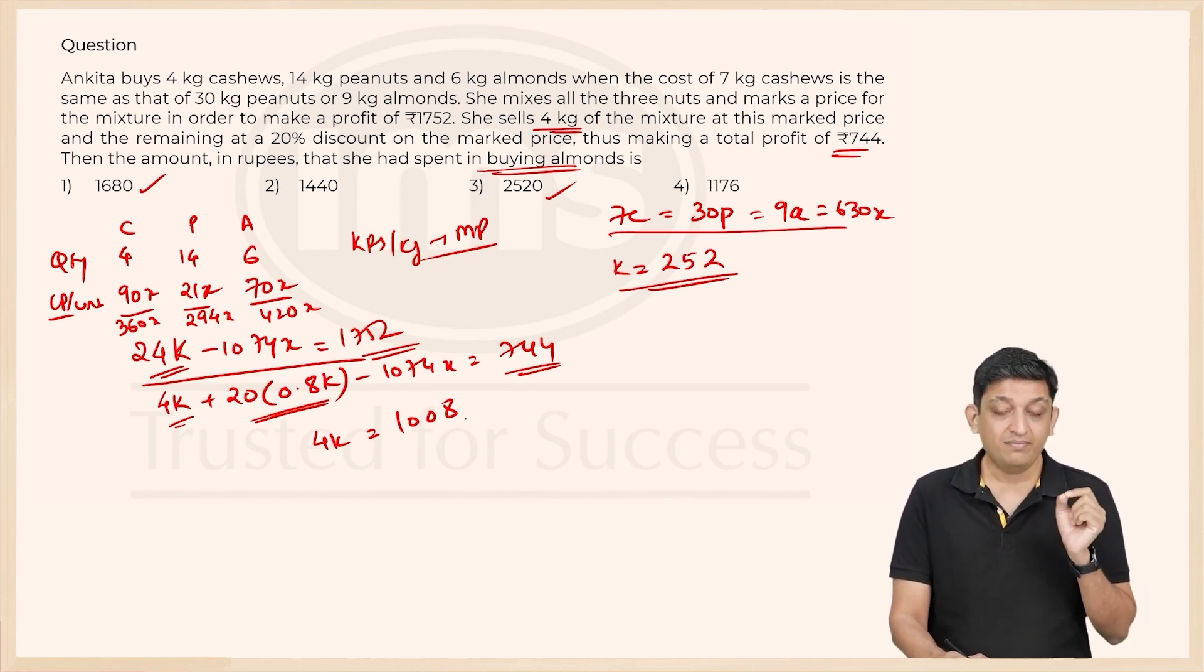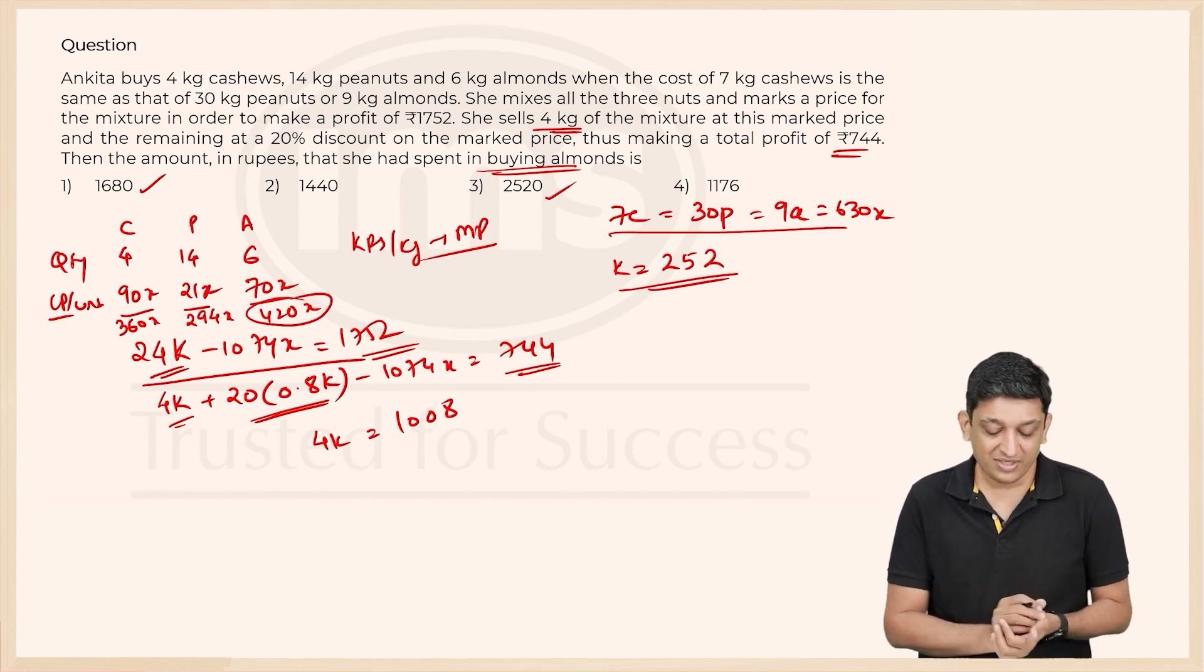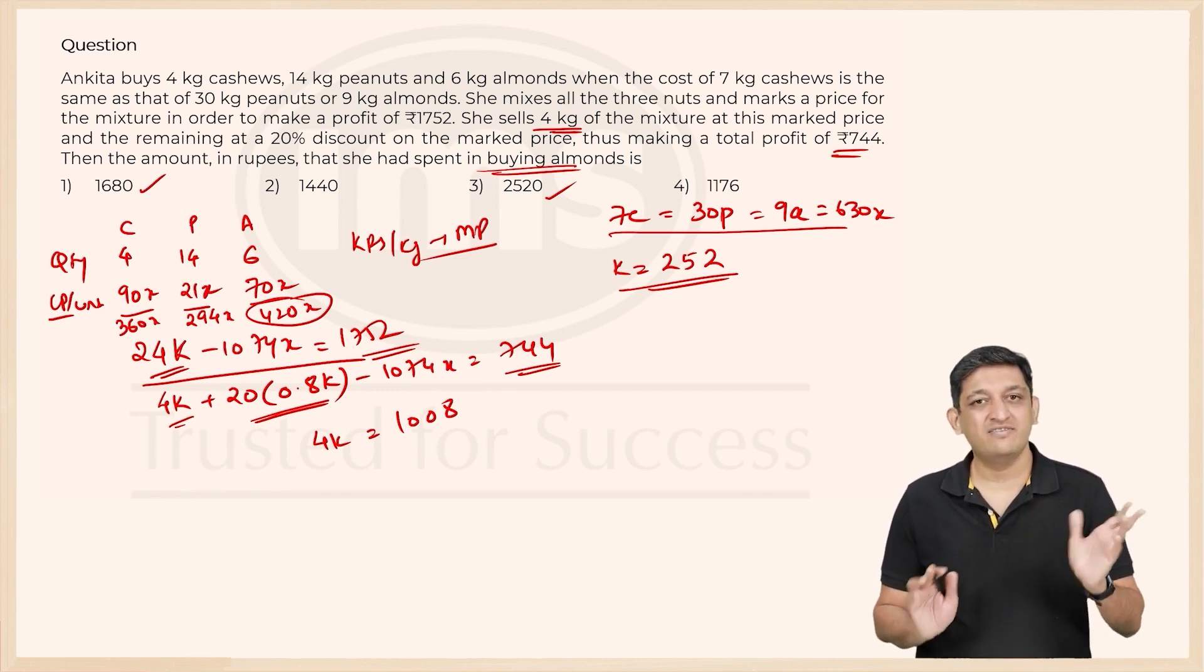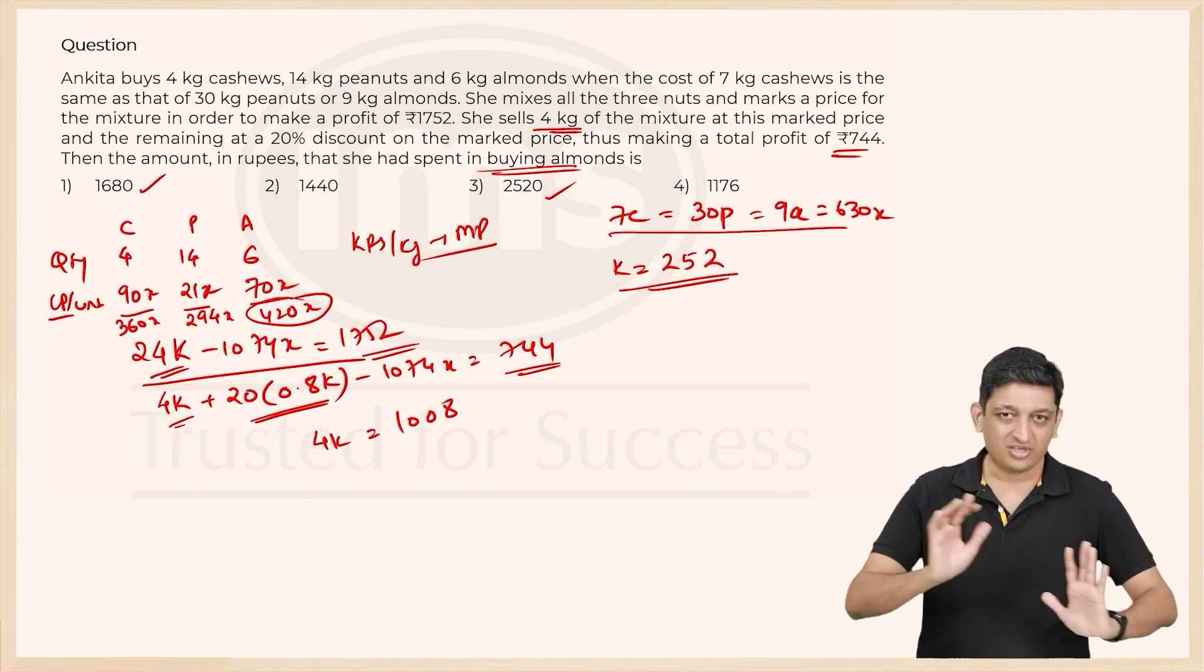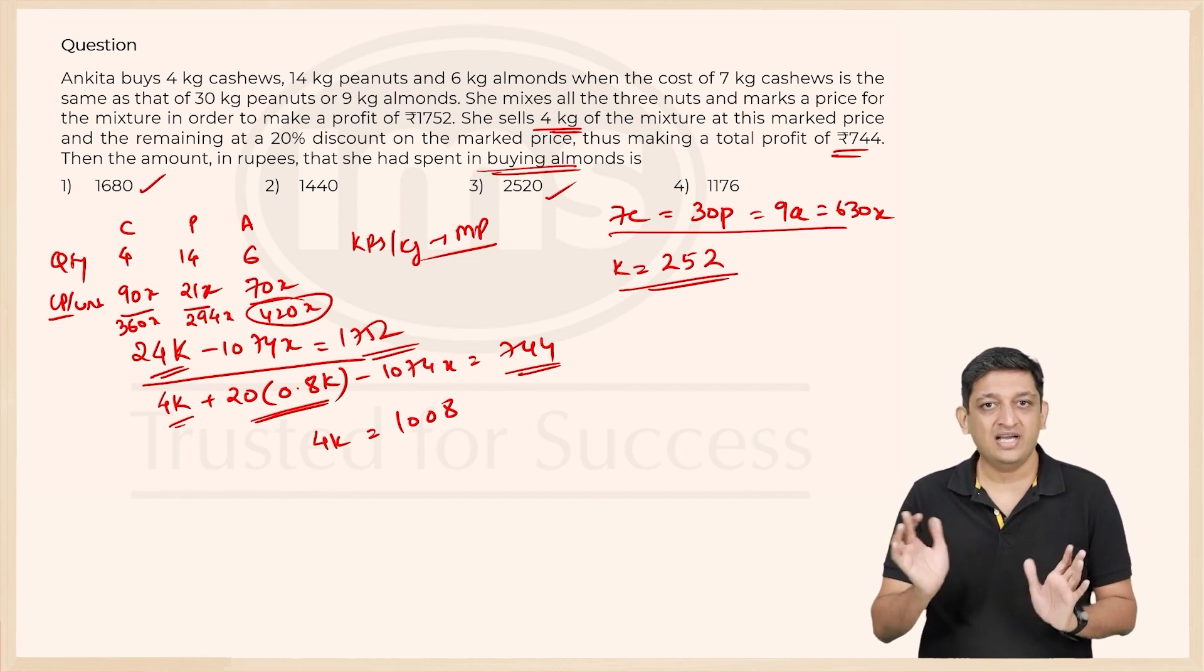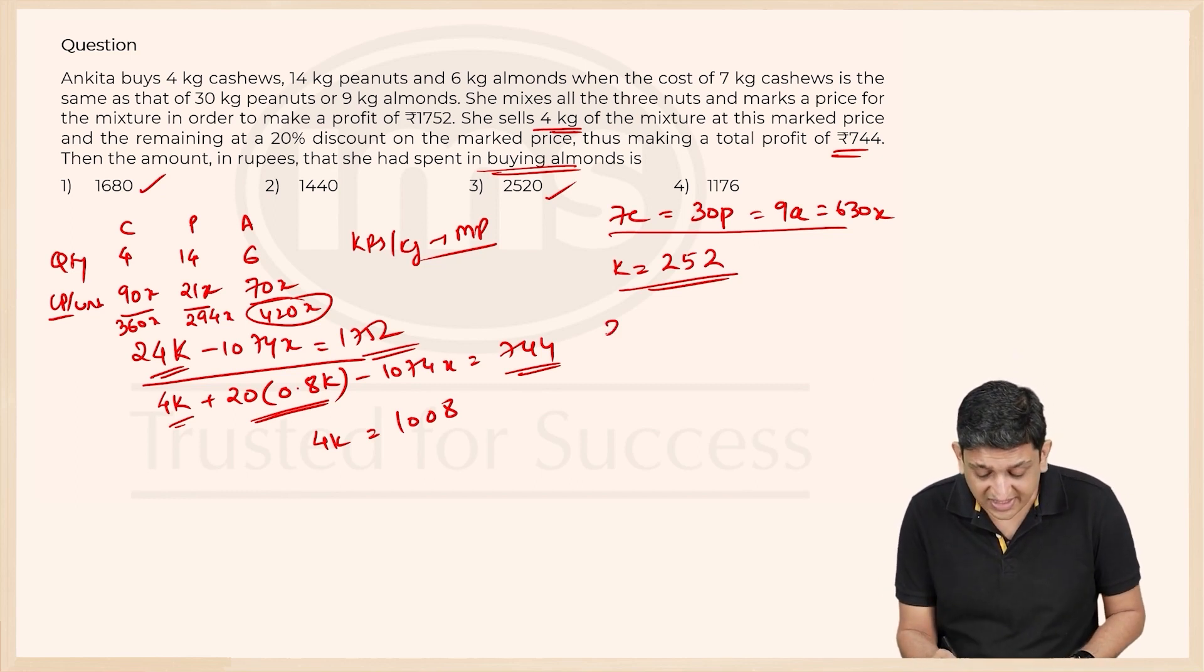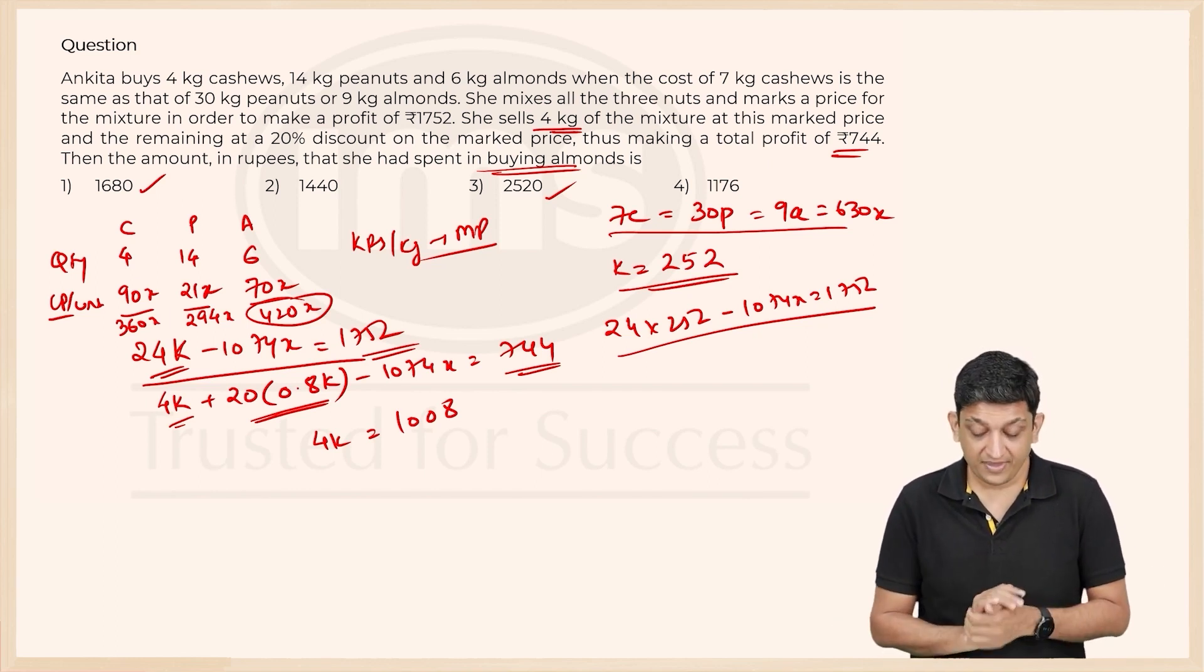You have to find the amount that she had spent on buying almonds which is 420X. I need to find the value of X. I found the value of K. Life becomes much easier now because we have two equations that have been given to us in the form of some K into some X. The only problem is 1074 times X but we can deal with that as well. You know that the answer is going to be either 4 or 6 because 1680, 2520 are the two numbers that we are targeting but it is okay to not know that as well.